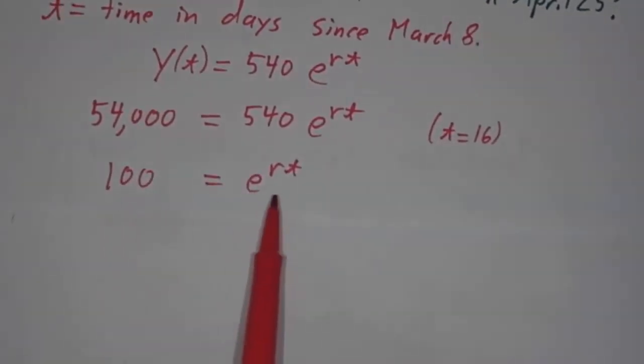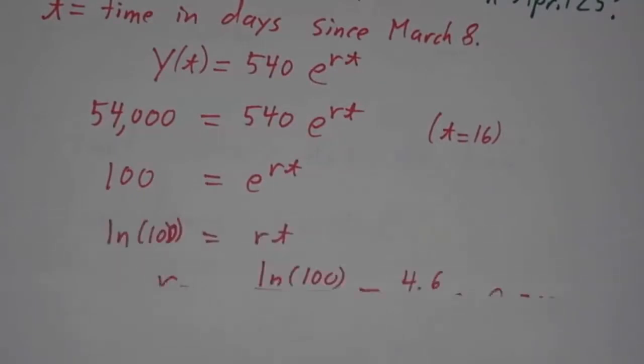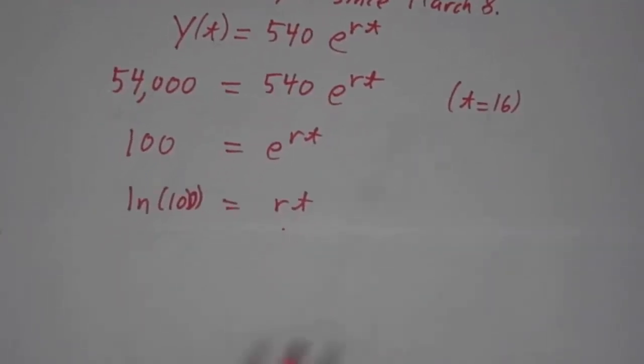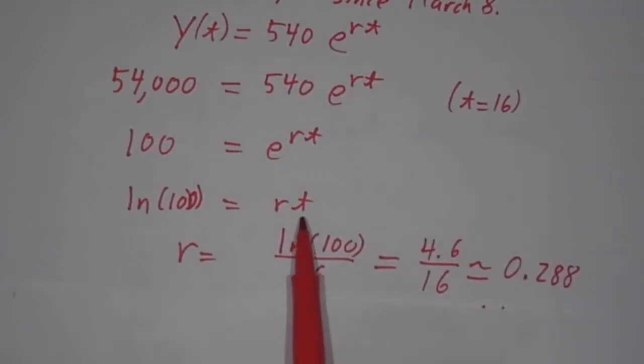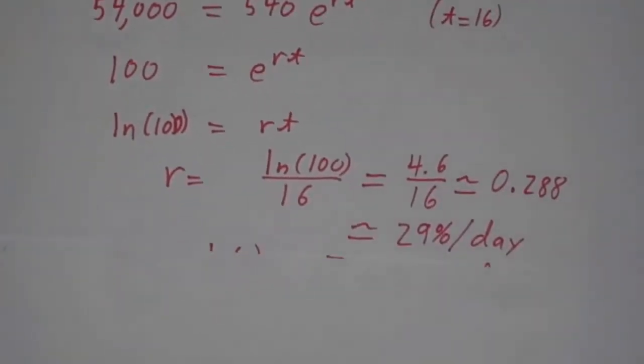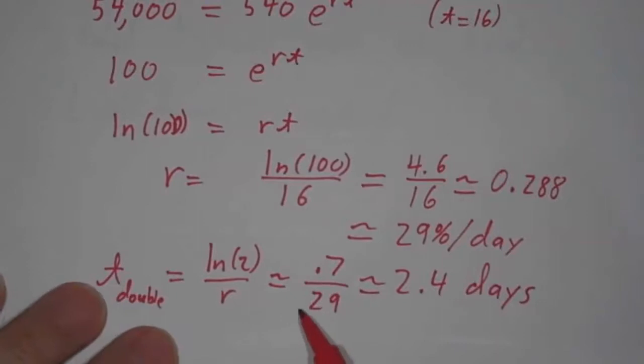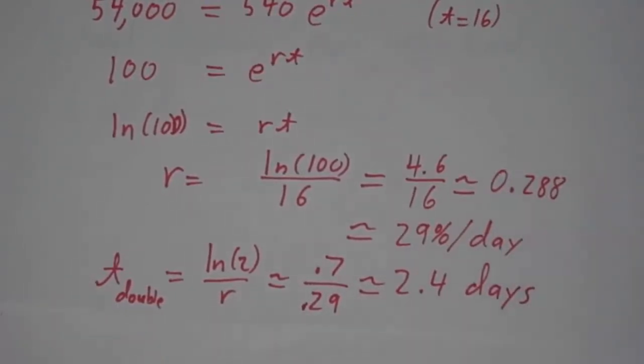So 100 is e to the rt. Just like with the second kind of problem, we take the log of both sides. The natural log of 100 is rt. The only difference now, instead of solving for t by dividing by r, we solve for r by dividing by t. r is the natural log of 100 divided by 16, which is about 4.6 divided by 16, or 0.288. In other words, it was growing at about 29% per day, and if you want to know the doubling time, you use the law of 70. You take 70 divided by 29, or 0.7 divided by 0.29, and that was about 2.4 days. The number of cases was doubling every 2 to 3 days.